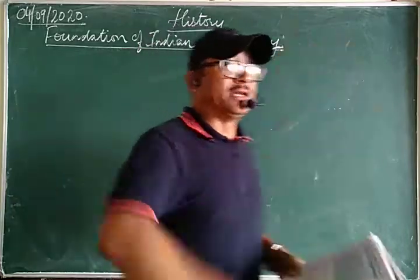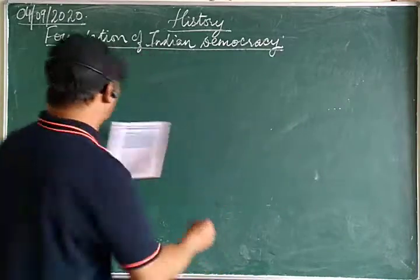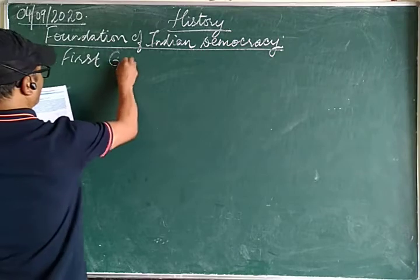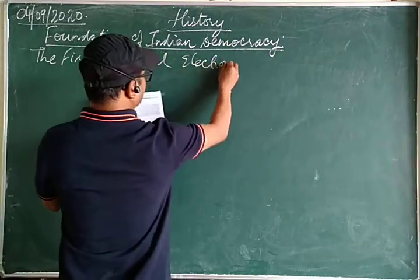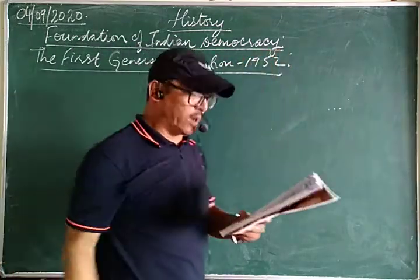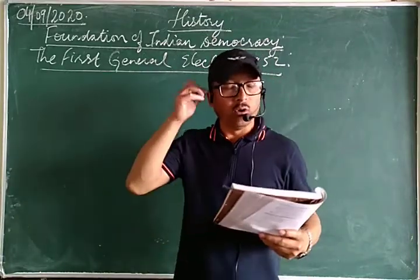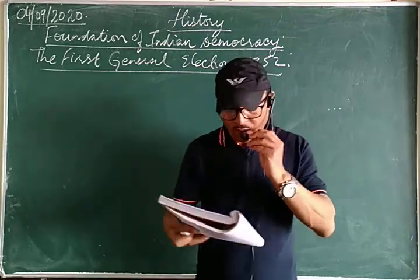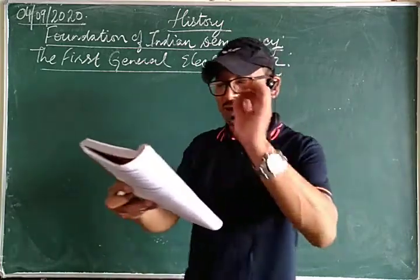About the significance of 26th January, I already explained in previous classes. Now let us move towards the first general election — very important. The first general election was held in the year 1952. Let's see how many total political parties were there, who stood up in this election, and who got the victory.